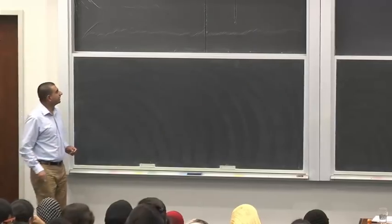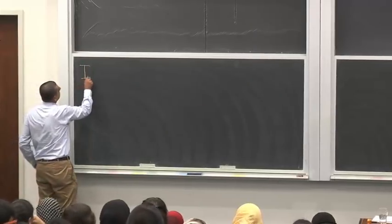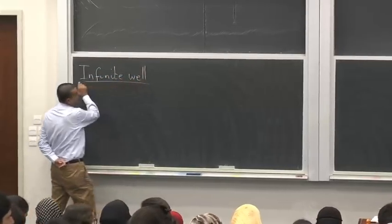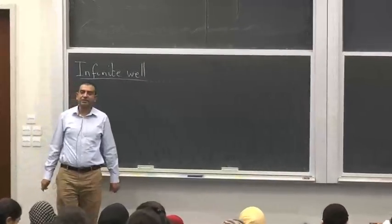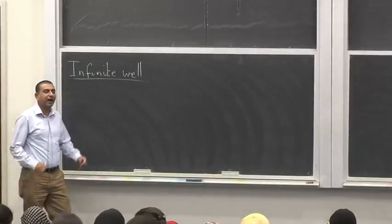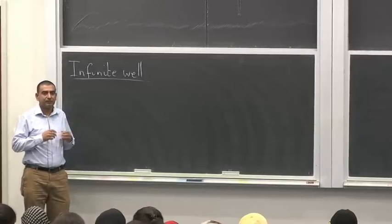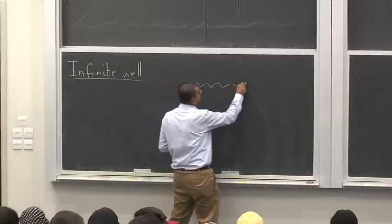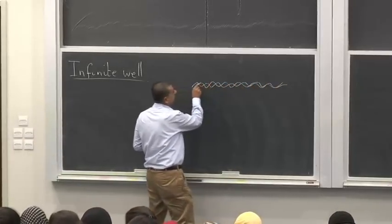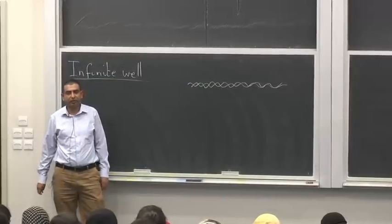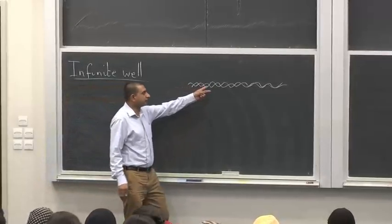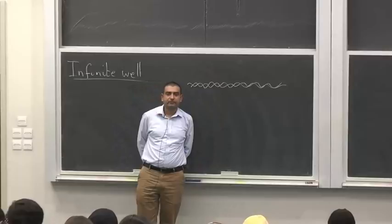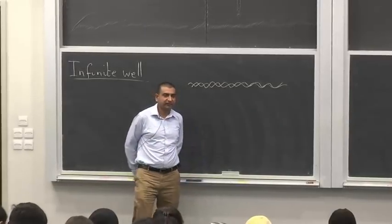We've looked at the infinite well and seen that the energies are quantized inside this well. Now, how can we physically implement such a well? One possibility is that we have a nanoribbon or a double helix, like the nanoribbon, and an electron is confined to exist only on this ribbon and cannot fall off the edges. So this is one possible physical implementation of an infinite well.